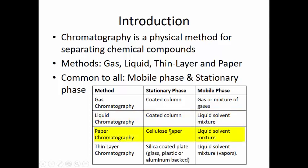For paper chromatography, the stationary phase is cellulose paper — that's the lab we're talking about today — and the mobile phase is a liquid solvent mixture or some type of gradient. For thin layer chromatography, the stationary phase is a silica-coated plate, where silica is adsorbed onto glass, plastic, or aluminum, and the mobile phase is a liquid solvent mixture.